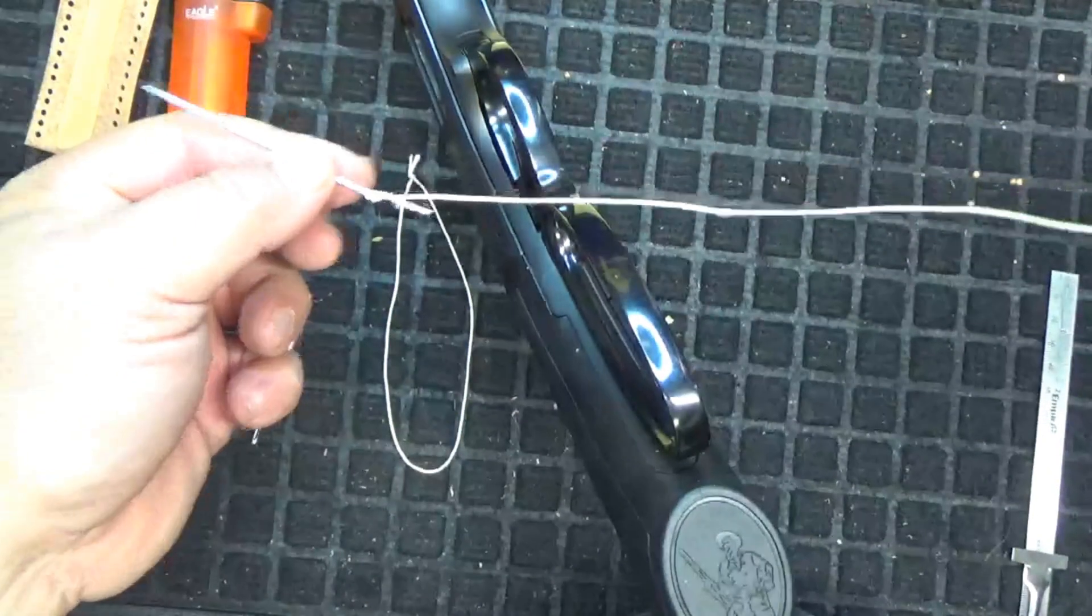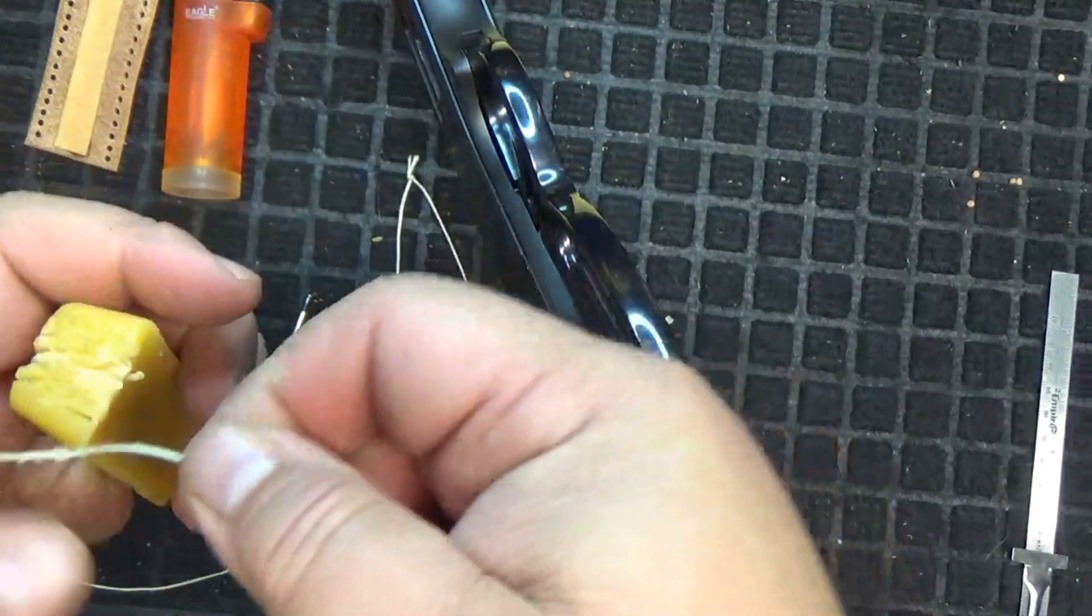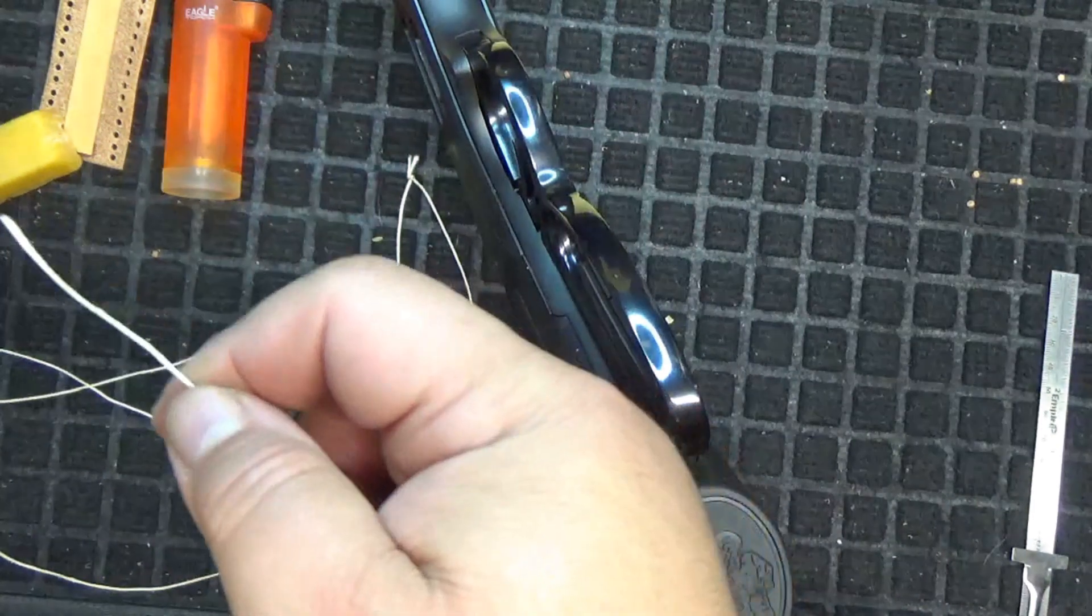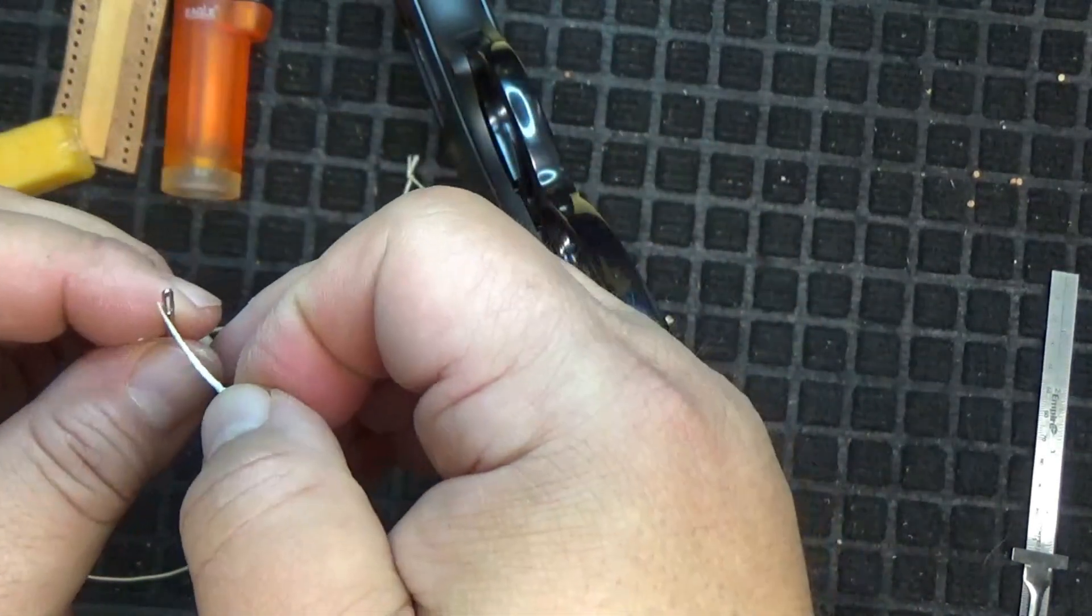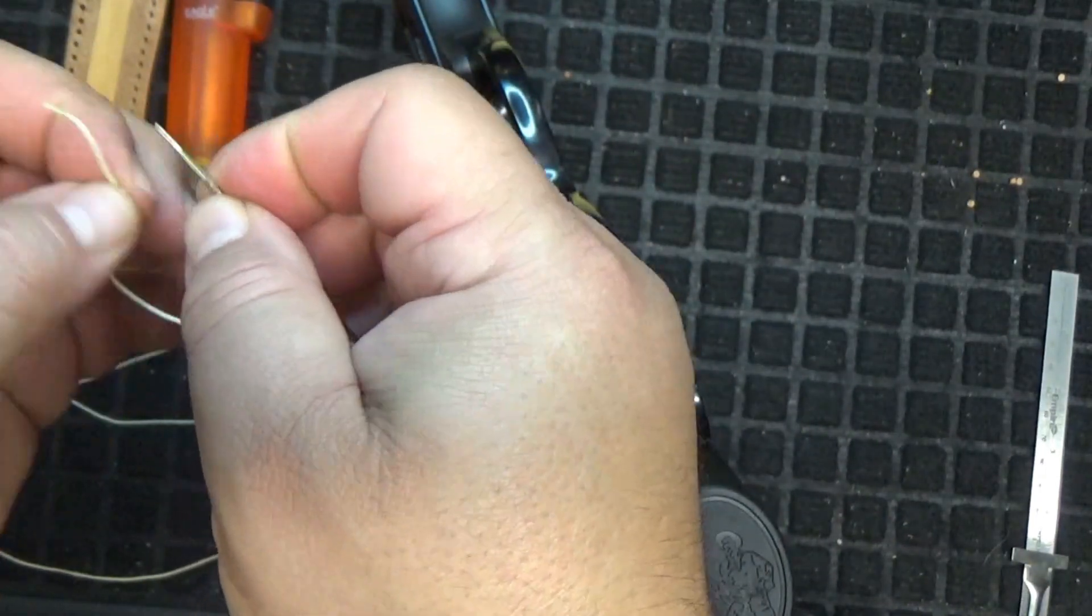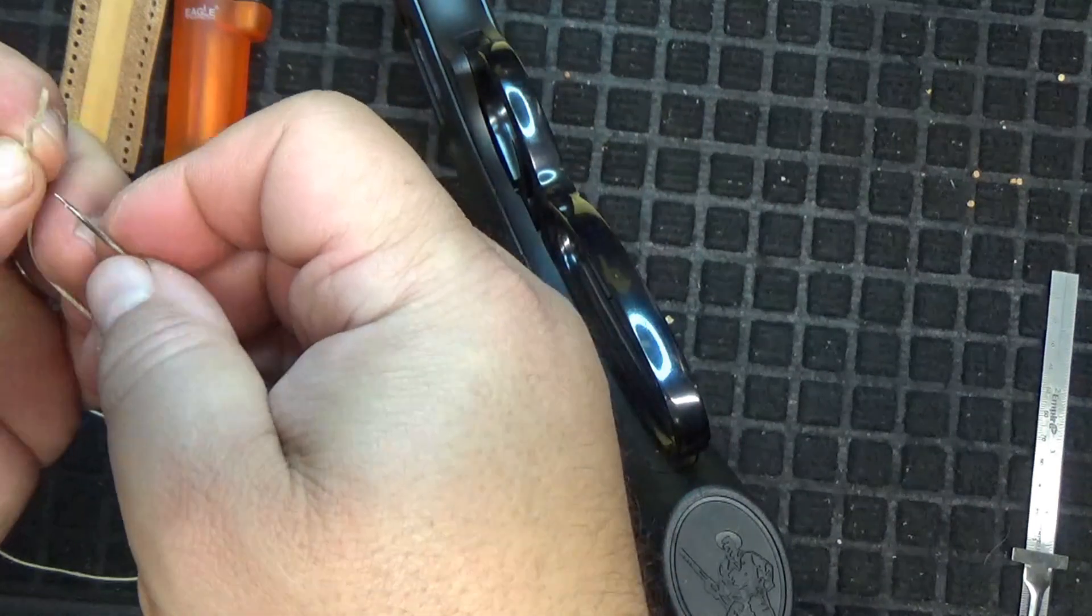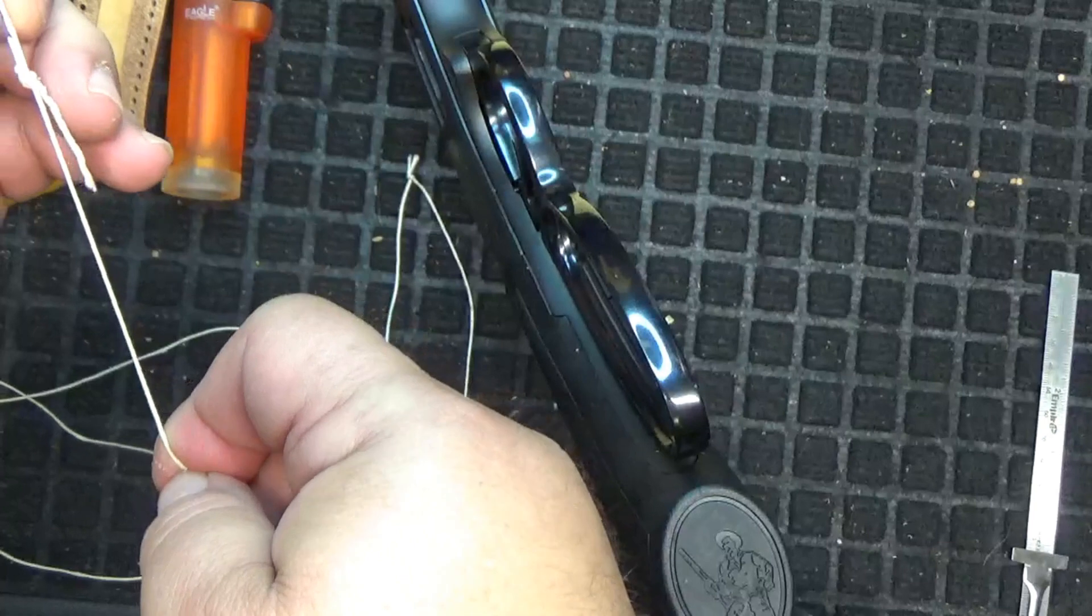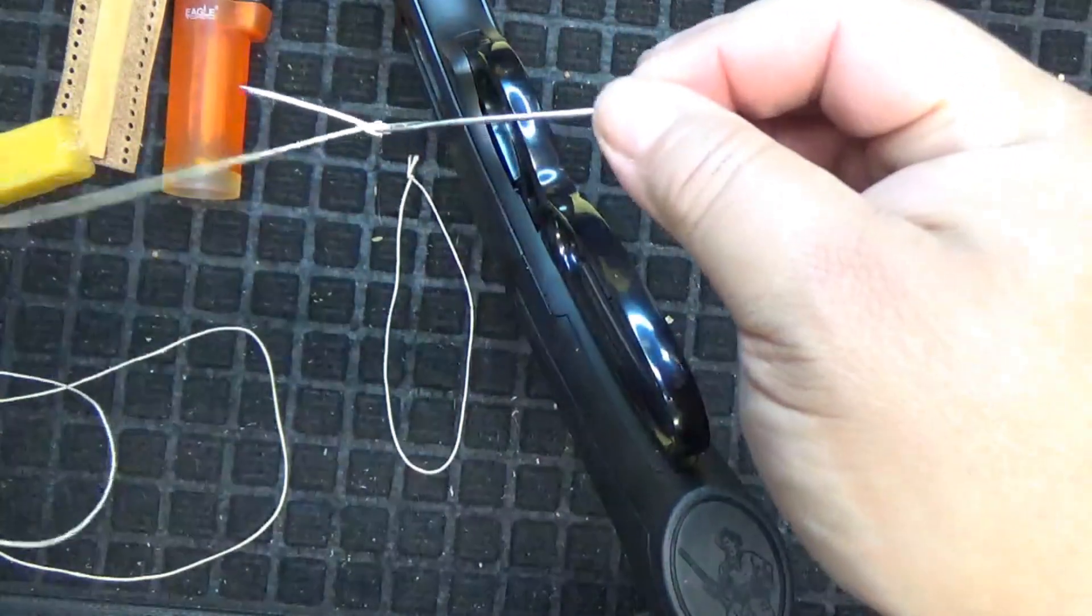You're going to repeat that for the other side. Hopefully this side goes a little bit faster. Sometimes you need to be an octopus to do these things, need more hands. Again, push it through the thread, not your finger. Needle number two.